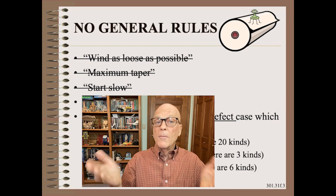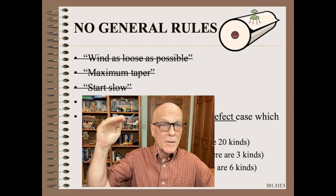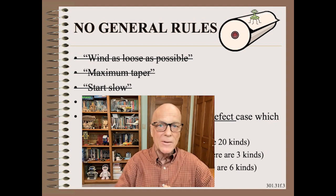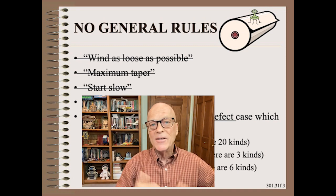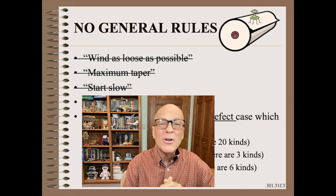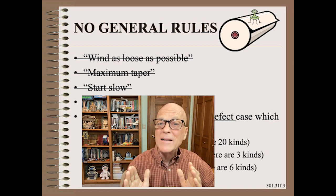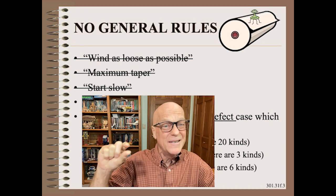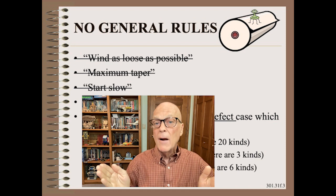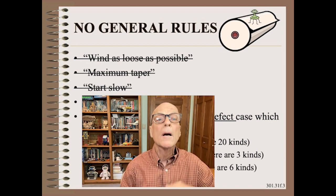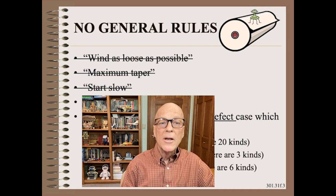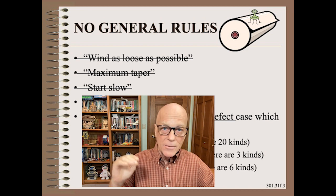You may have heard general rules on how to improve winding. Examples include: wind as loose as possible, wind with maximum taper, start the wind slowly, and many more. Unfortunately, while they can be used for response in some very narrow situations, they are in general incorrect, incomplete, or counterproductive. For example, if you wind looser, you will aggravate already loose defects.